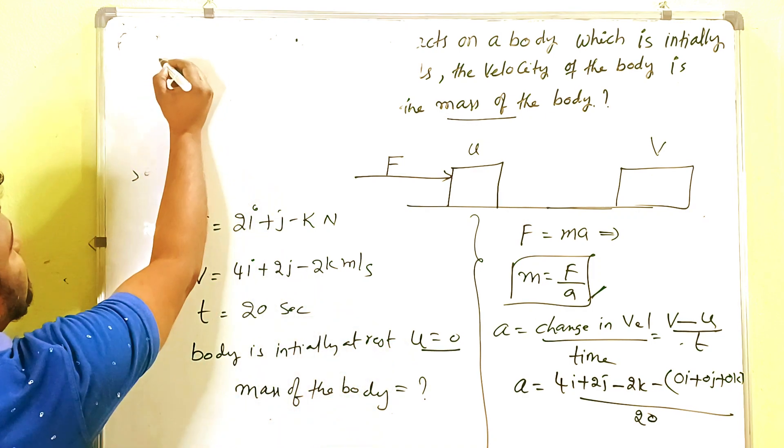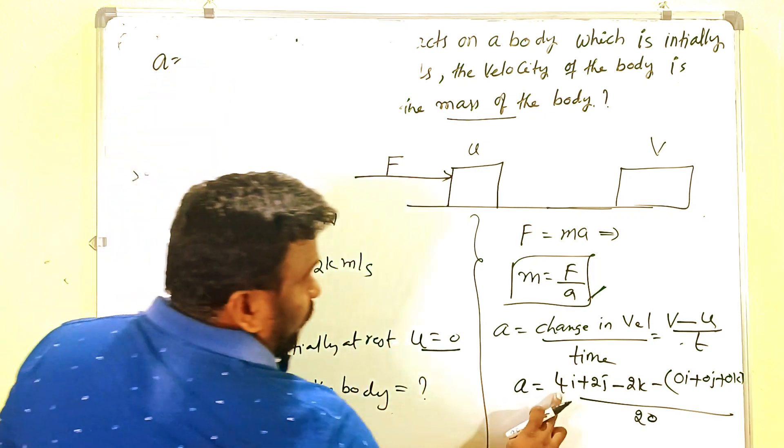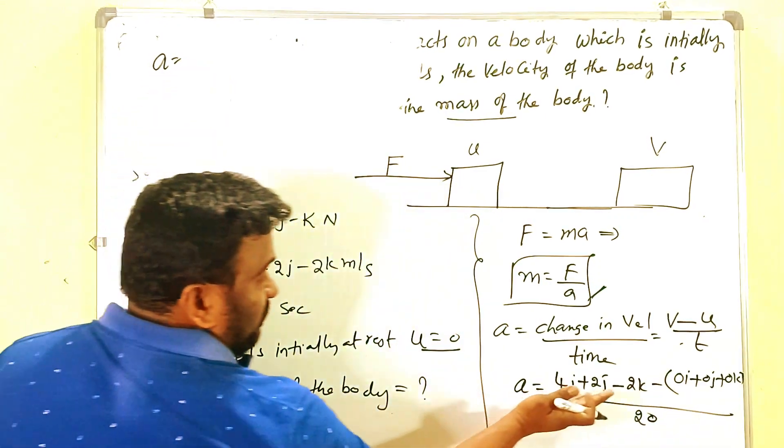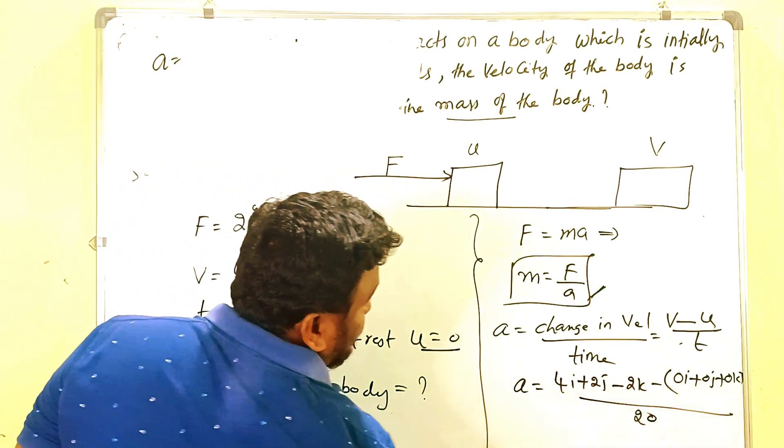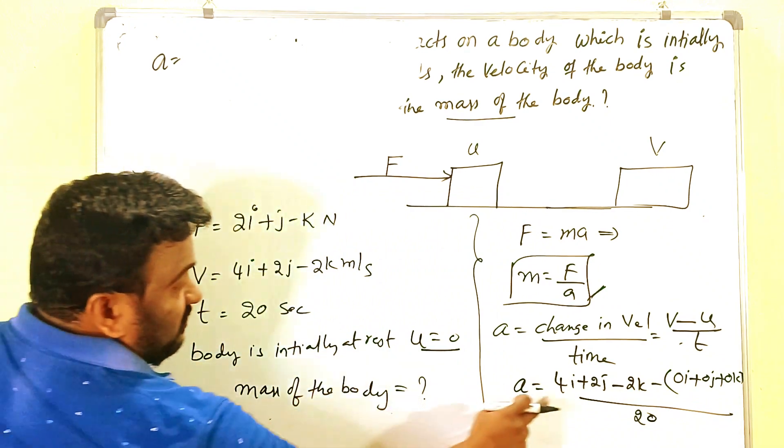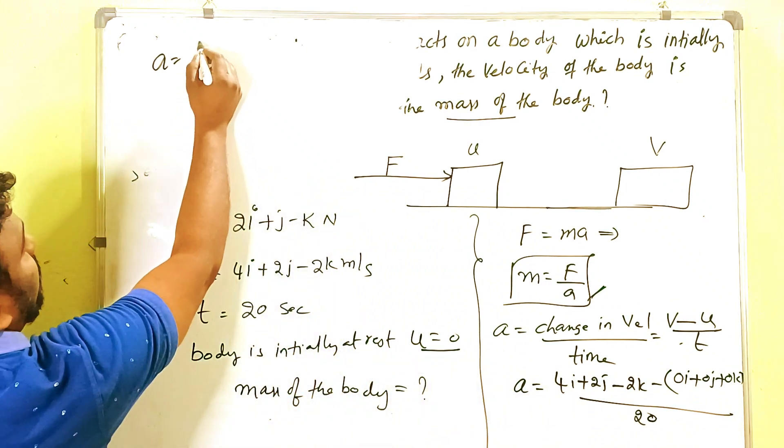Then we get 4i minus 0i, 2j minus 0j, minus 2k minus 0k. So you will get the same thing: 4i plus 2j minus 2k by 20.